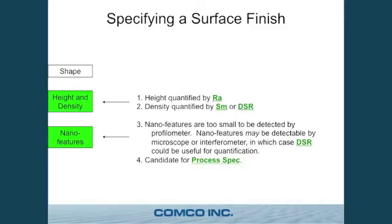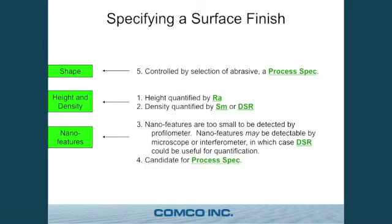Nano features might be quantifiable if you use one of the high-end interferometers. I can't say that for certain — I've never actually seen that done successfully — but it can be controlled with a process specification. The last thing in specifying a surface finish is shape: do you want that grit blasted look or that peened type surface? That's not something that ever comes out of a profilometer — you as a human can look at it and tell — but the easiest way to control it is to use the same abrasive each time.